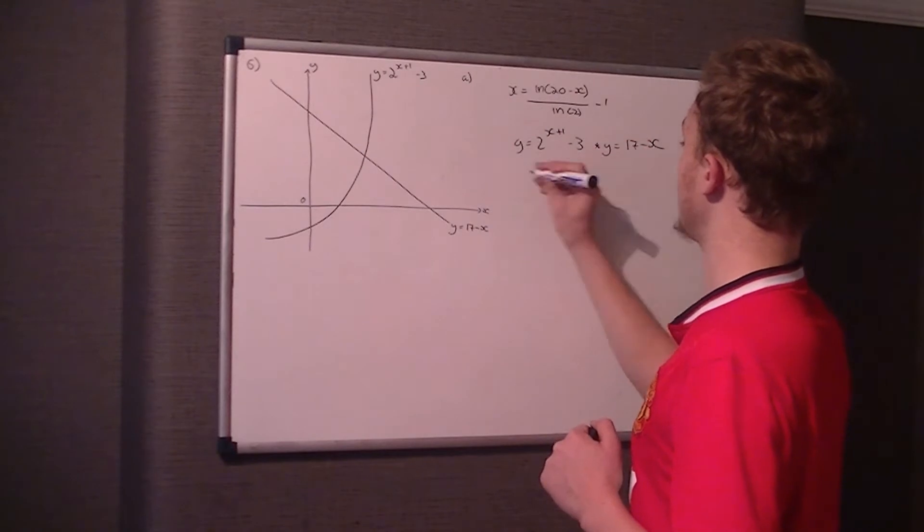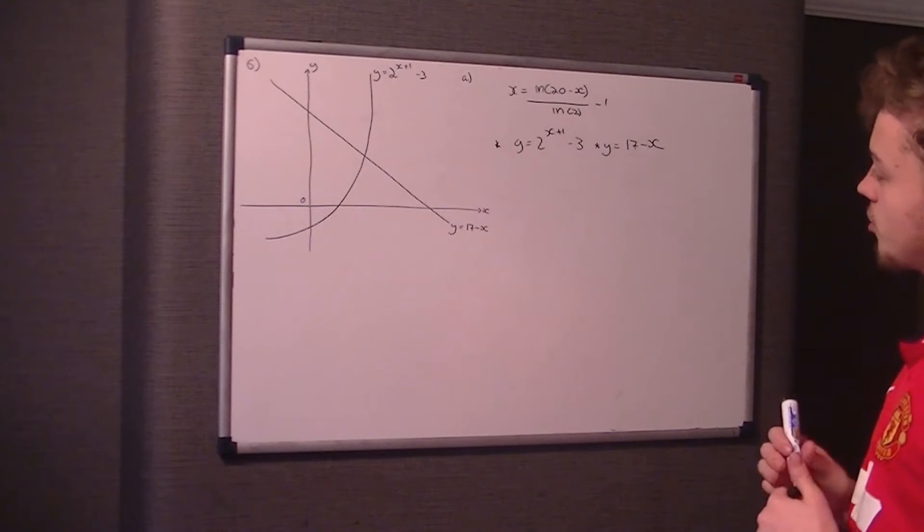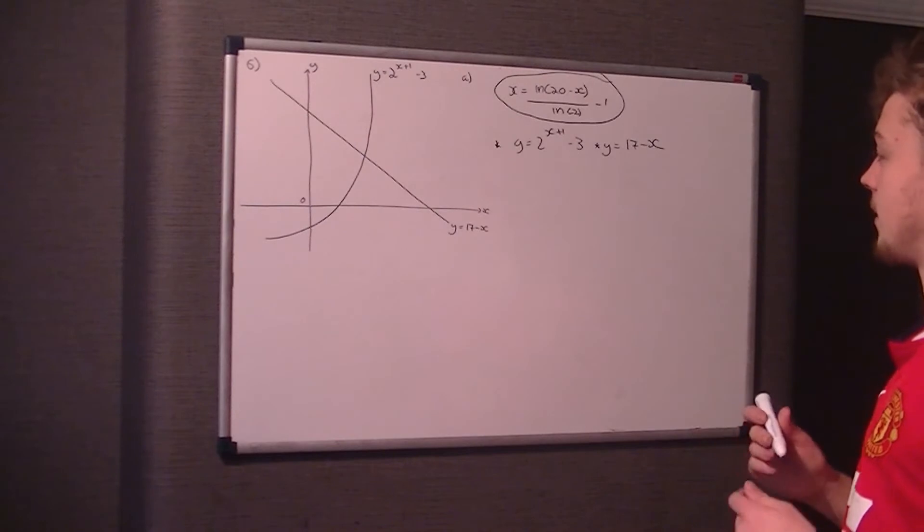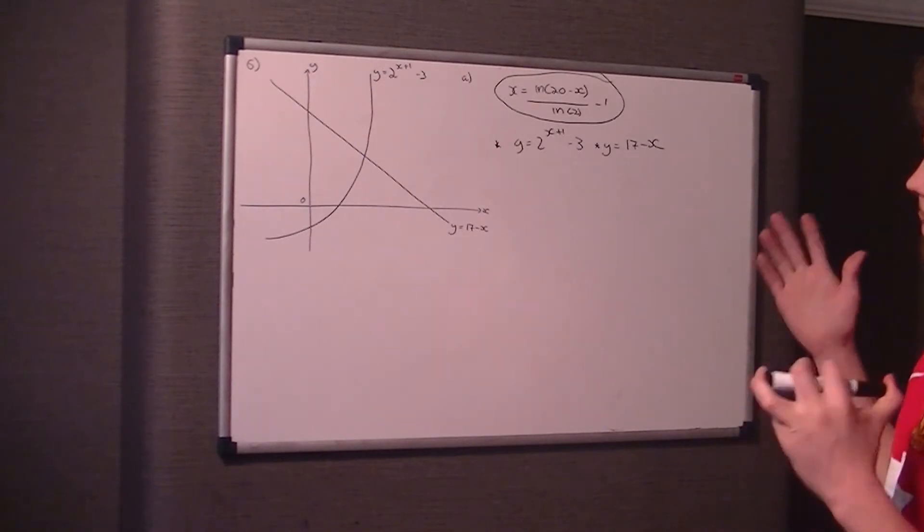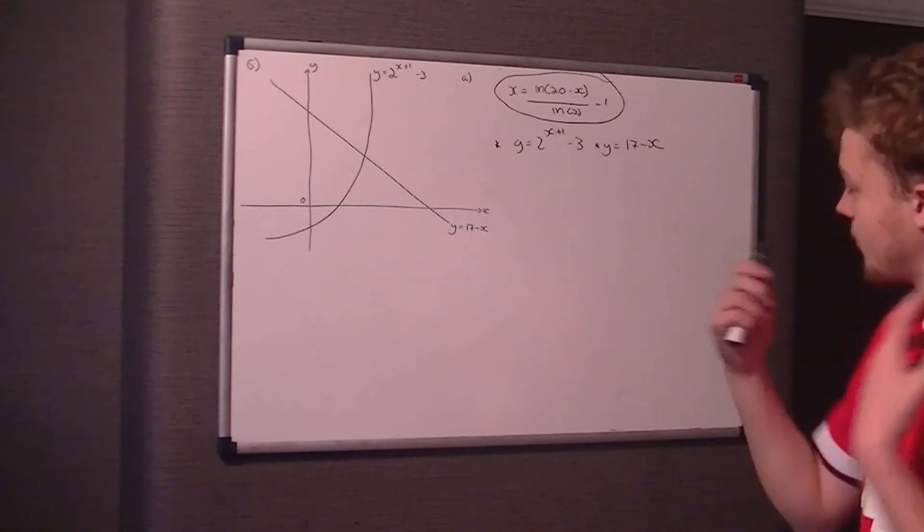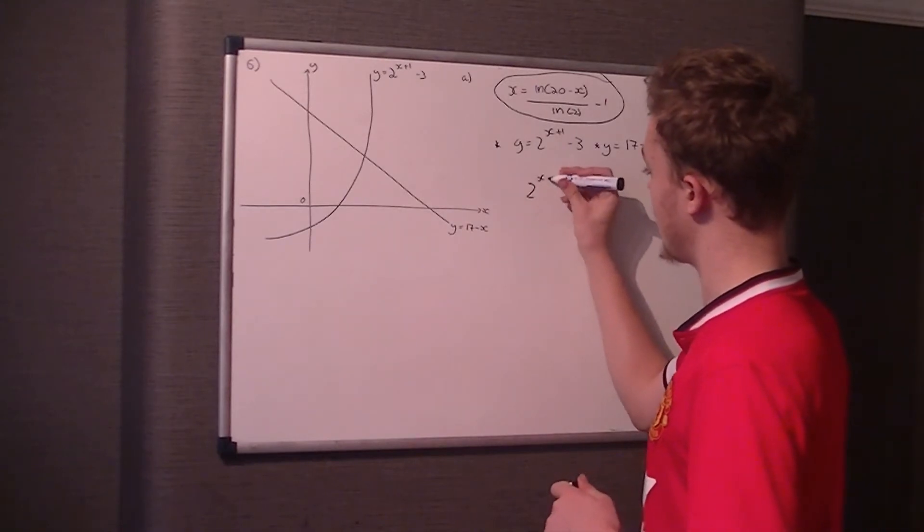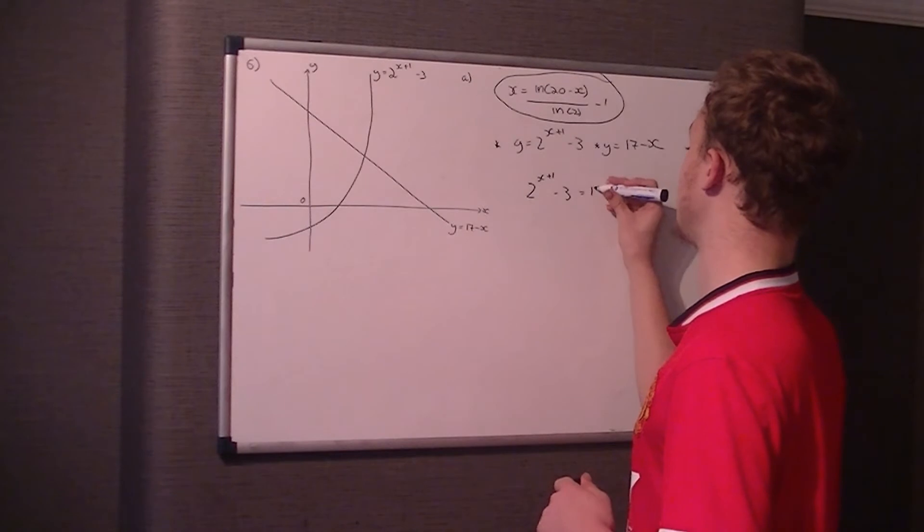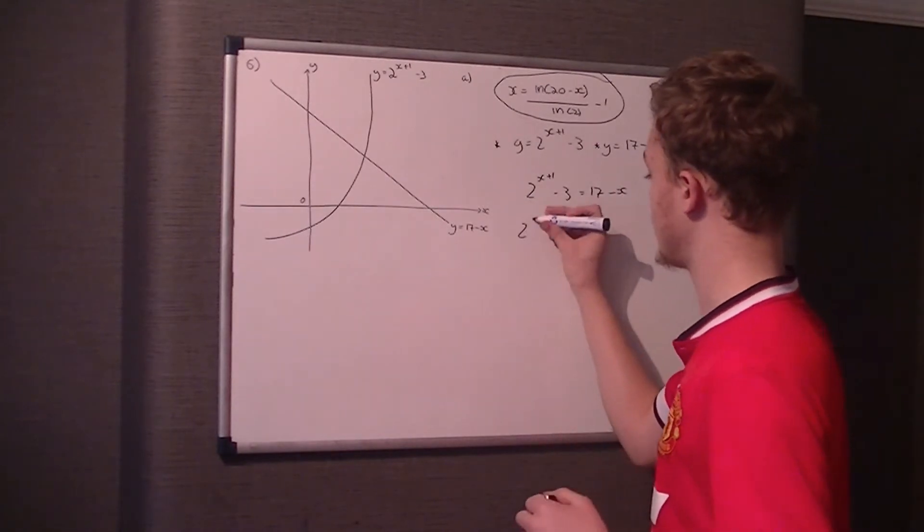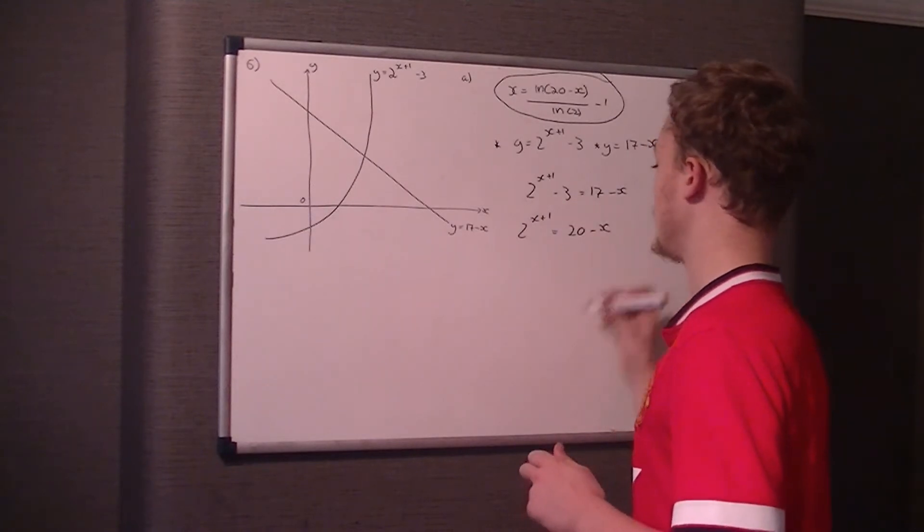Now, the key thing I would do is look at what we're trying to get and what we've currently got. What we're trying to get is x equals the LN of 20 minus x over the LN of 2 minus 1. The thing I noticed first with me is we don't have a 20 there. So obviously, we're going to have to make them equal to each other. So if we do that, 2 to the power of x plus 1 minus 3 equals 17 minus x. We need a 20, so 2 to the x plus 1 equals 20 minus x.